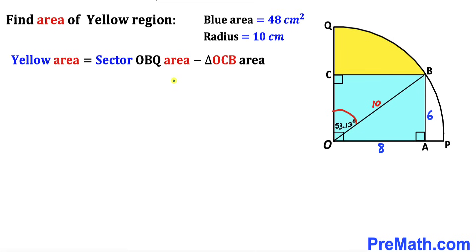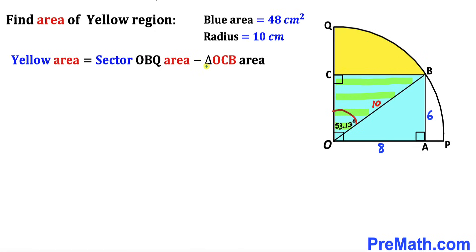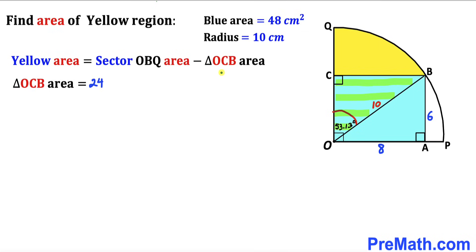The yellow shaded area equals the area of sector OBQ minus the area of triangle OCB. Since the area of the blue rectangle is 48, triangle OCB is half of that rectangle, so the area of triangle OCB equals 24.